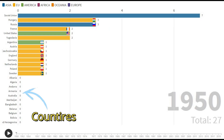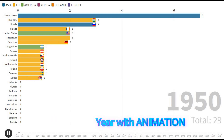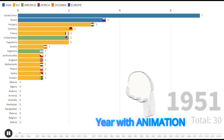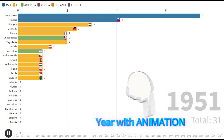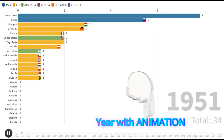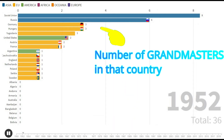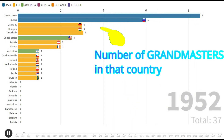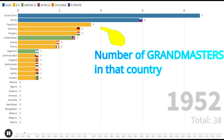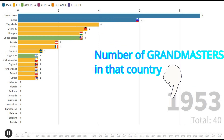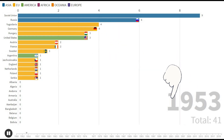On the left-hand side, or y-axis, we have countries. On the x-axis, we have the year with animation, and you can see the numbers increasing or decreasing — those are the number of grandmasters in that country in that year.